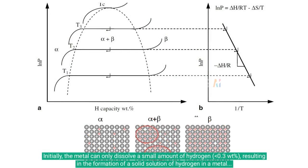Initially, the metal can only dissolve a small amount of hydrogen, less than 0.3 weight percent, resulting in the formation of a solid solution of hydrogen in a metal matrix alpha phase.